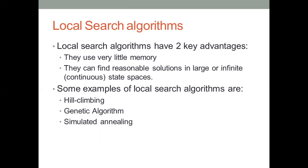When you start somewhere randomly at a position, you focus on the nearby neighbor node and keep on moving. It is similar to a random walk, but the initial place is random and for each next possible move we are going to take the best one and proceed. This is called a local search algorithm.